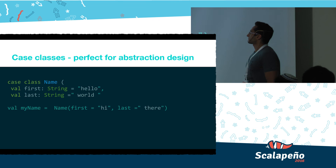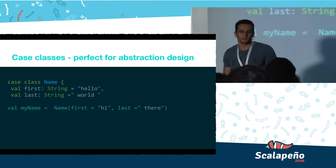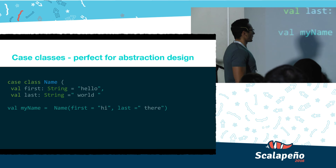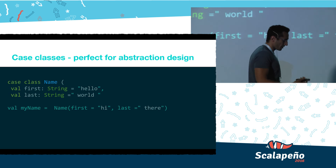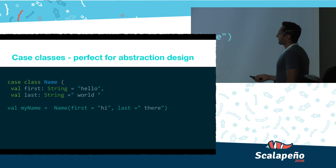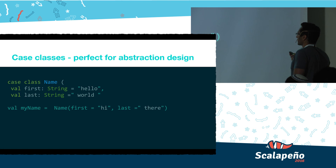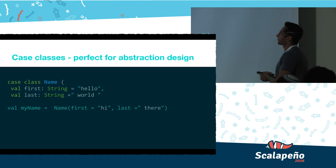Another feature Scala has is case classes. Case classes are a perfect way to design abstractions of objects. Why? First, they have default parameters and default values — I can pass on the default values I want. Second, they have named arguments, so I can initiate a new class called Name, give it `first = hi`, `last = there`. It's really clear what the case class's context is.